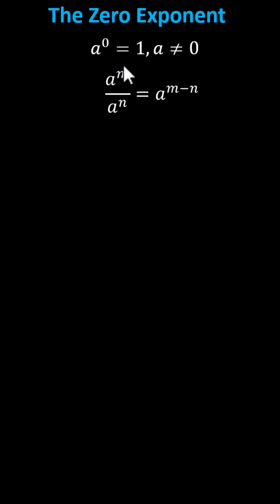Why is a to the power of zero equal to one, as long as the base a doesn't equal zero? Let's show why this exponent rule is true using the quotient property of exponents, which states a to the power of m divided by a to the power of n equals a to the power of the quantity m minus n.